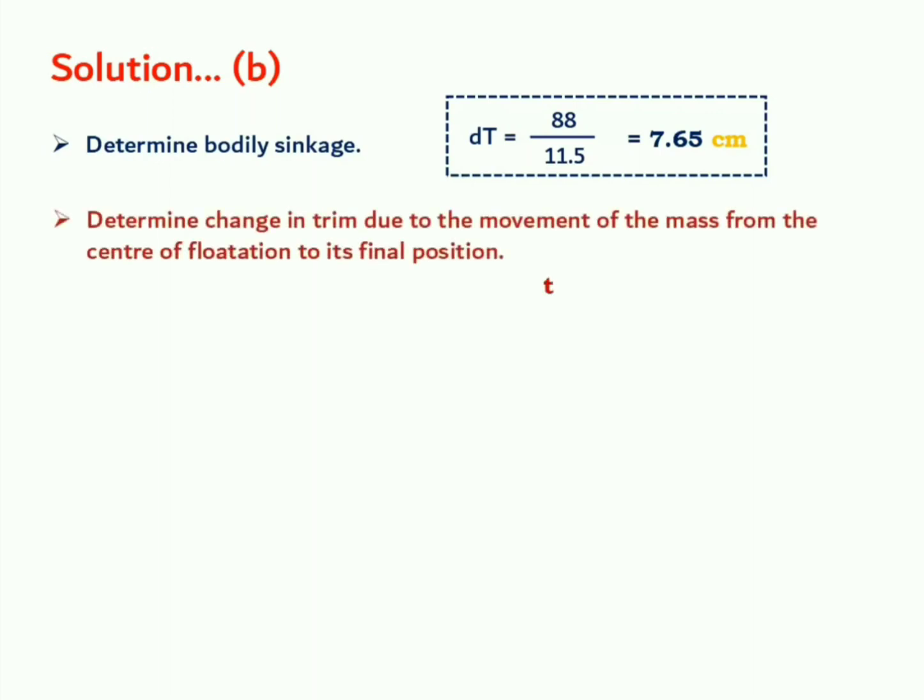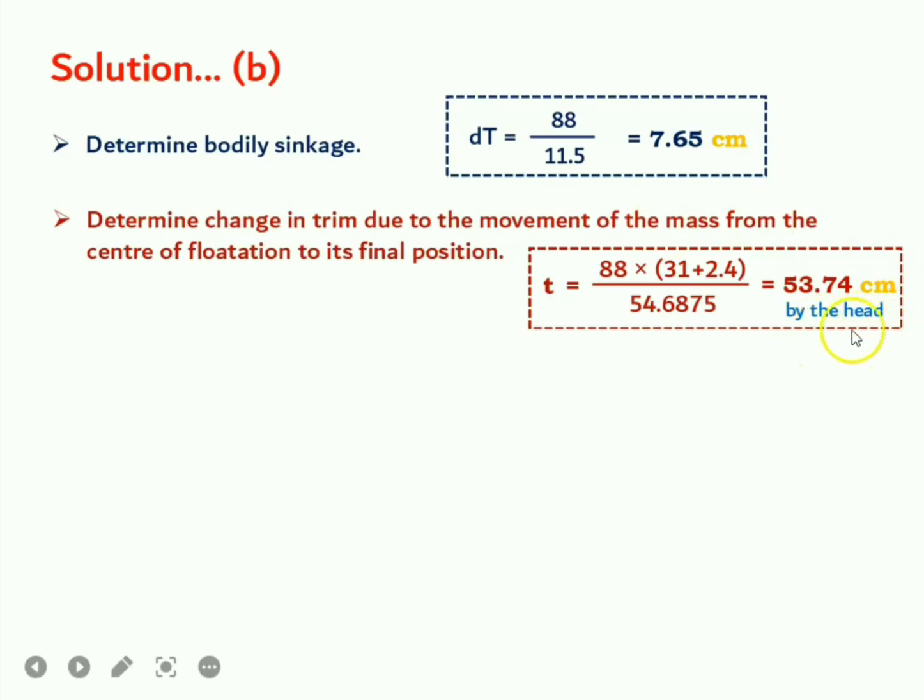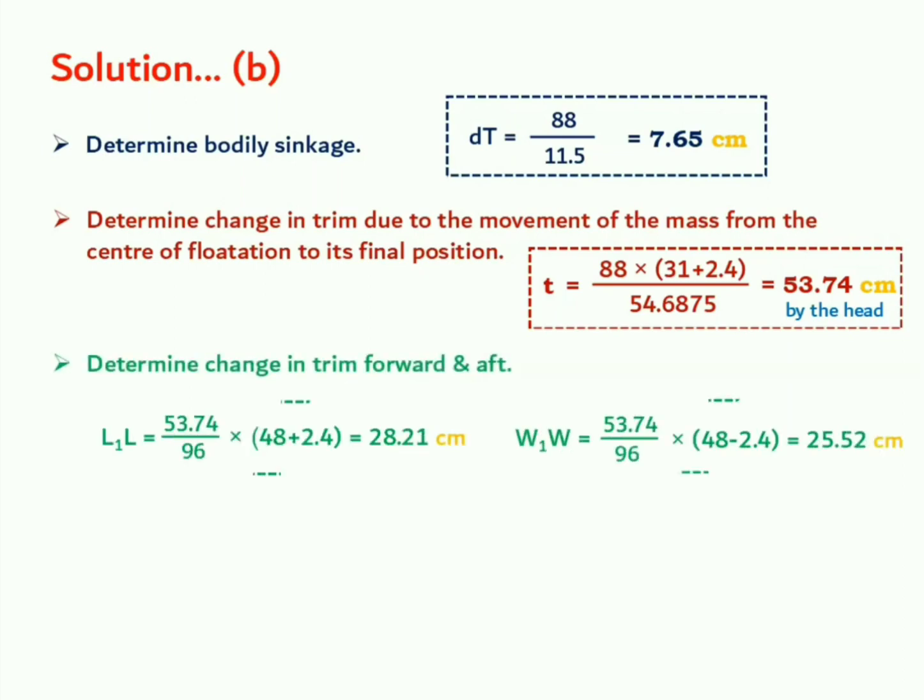Let us now move on part B. The bodily sinkage will be determined by dividing total mass added with the TPC which is coming to us as 7.65 cm. Now change in trim is expressed by m into d divided by MCT. Magnitude of that mass is 88 ton. The total distance covered is 31 plus 2.4 and MCT is 54.6875. This is giving us 53.74 cm as the change in trim by the head. Now how exactly we come to know whether it is the change in trim by the head? We have shifted apparently the mass towards forward and this is why it is creating access movement forward and hence causing the ship to change its trim by the head.